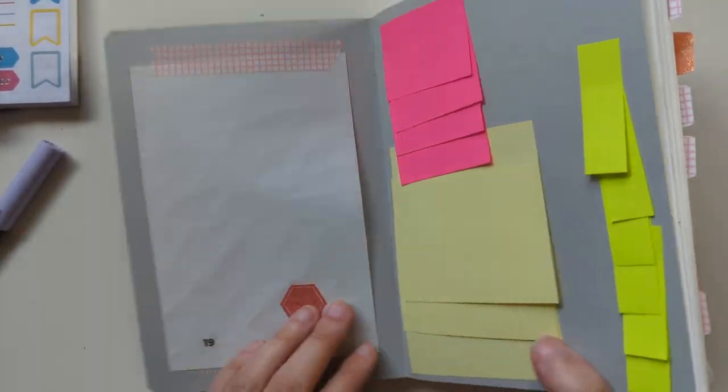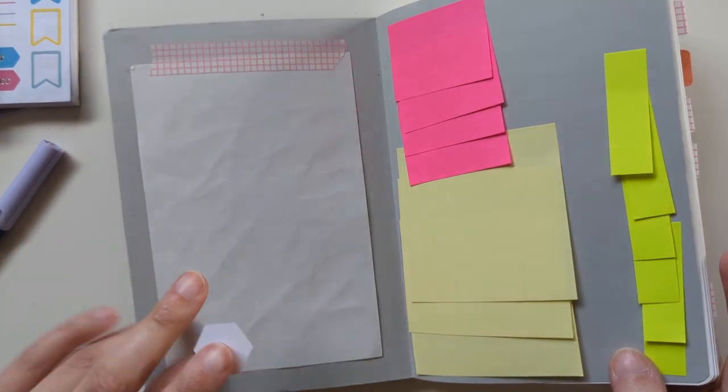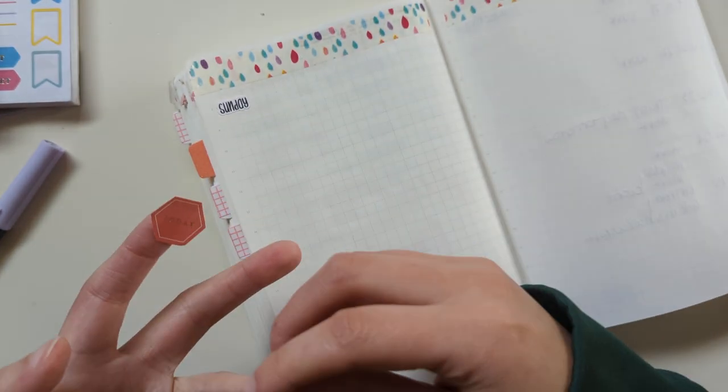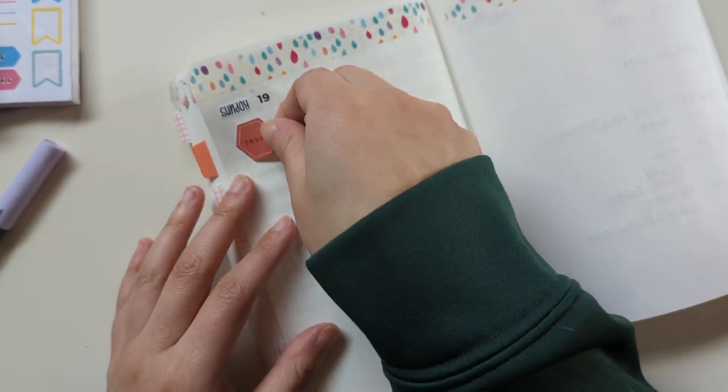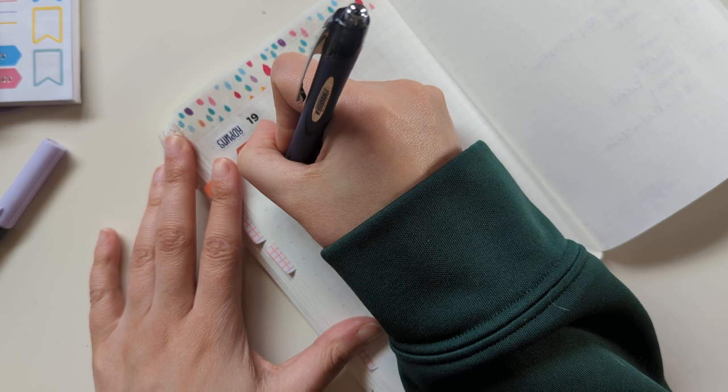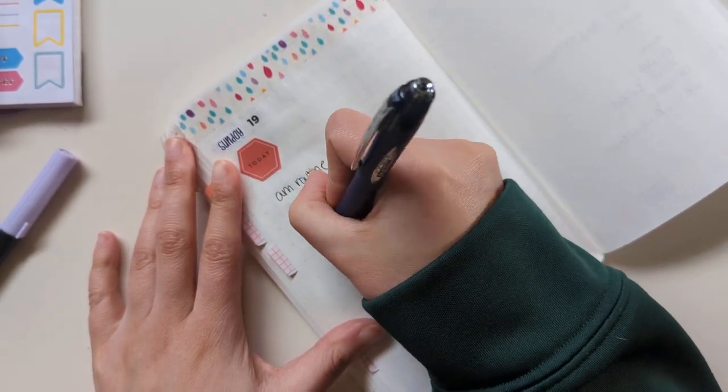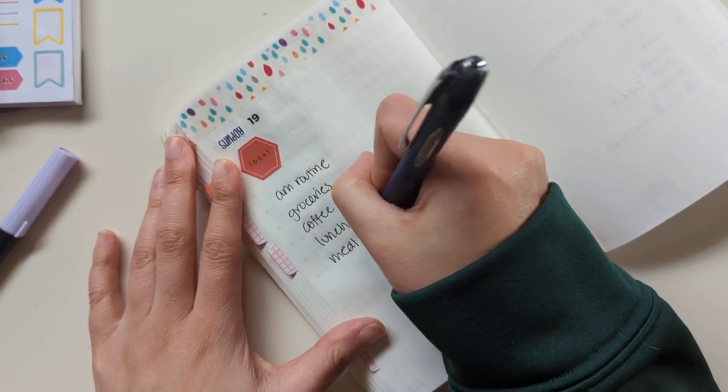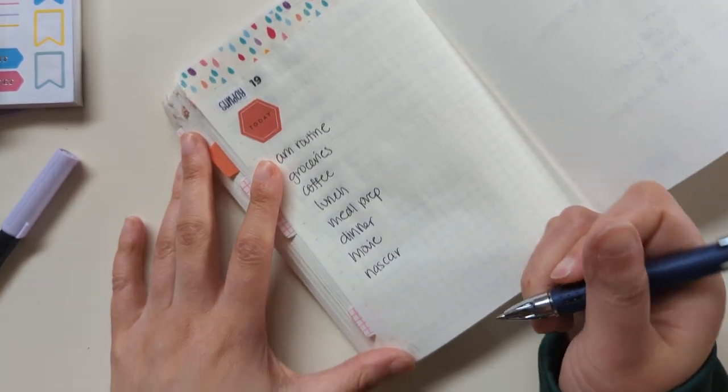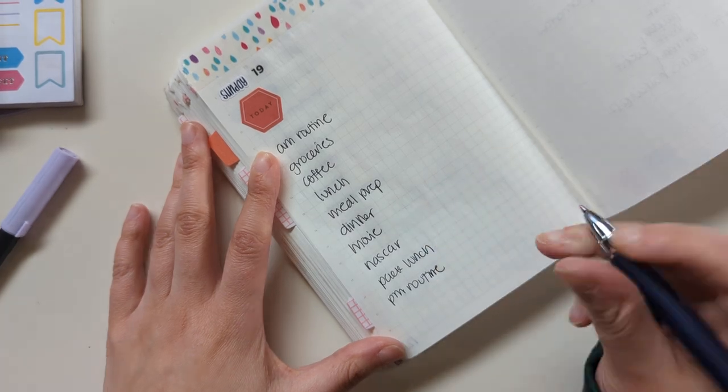So I'm going to put this sticker sheet here, just so I don't have to carry around all my stickers. So tomorrow is Sunday and it's the 19th and I'm going to use this today sticker. So tomorrow we plan to, going to do my AM routine, groceries, coffee, lunch, meal prep, dinner, probably watch a movie, but I think there's NASCAR on, so we'll do that probably and I'll pack my lunch and PM routine and probably other stuff, but it's kind of what I have for now.